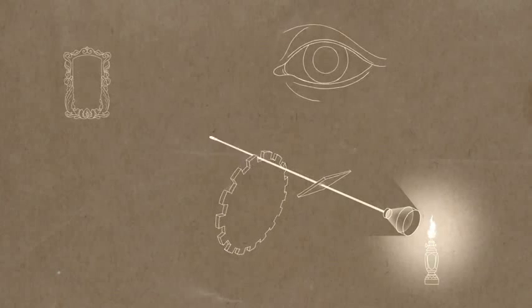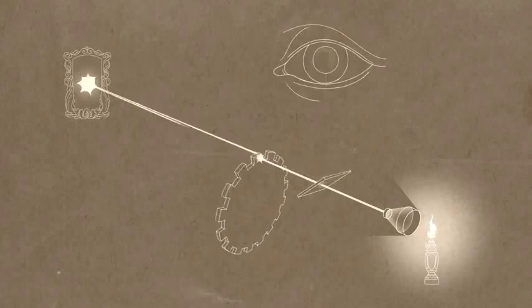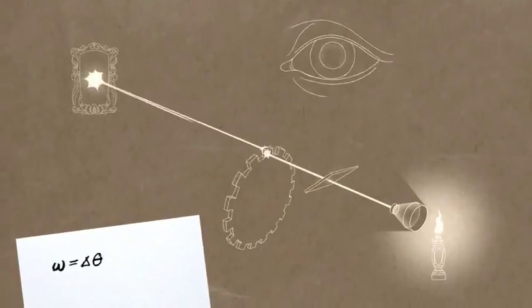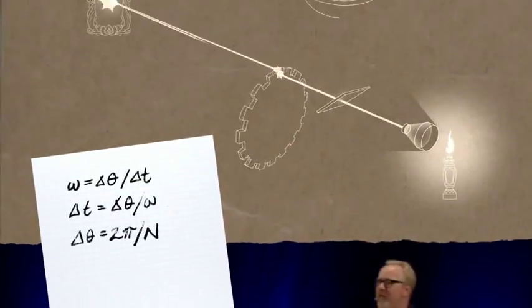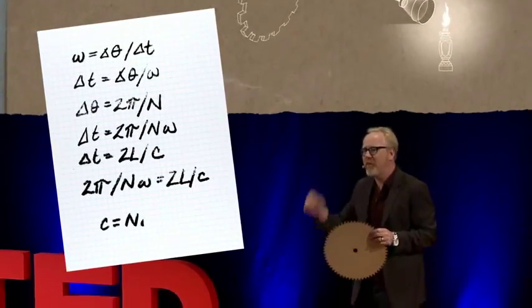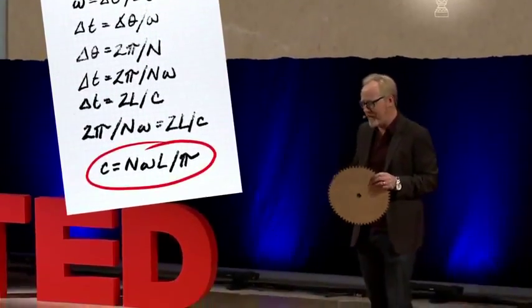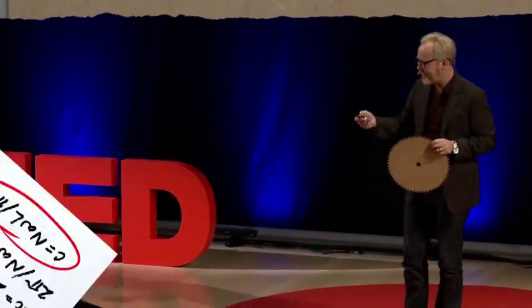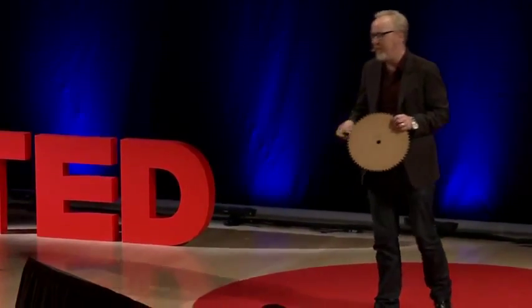It's actually hitting a tooth. And he spins the wheel fast enough, and he fully occludes the light. And then, based on the distance between the two stations, and the speed of his wheel and the number of notches in the wheel, he calculates the speed of light to within 2% of its actual value. And he does this in 1849.